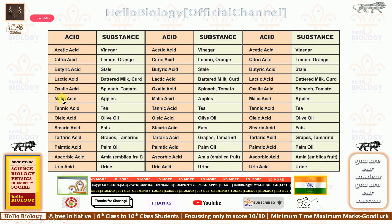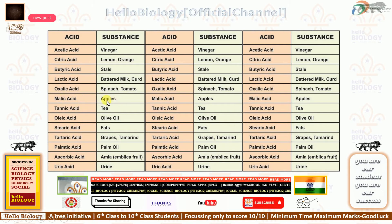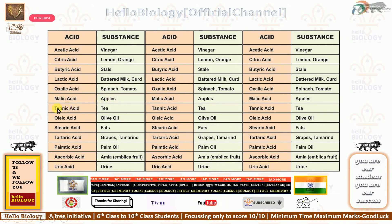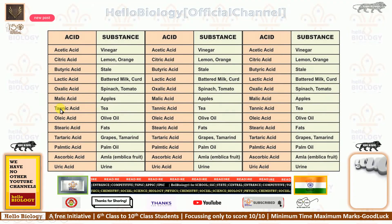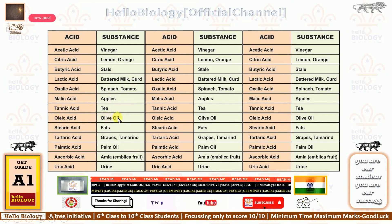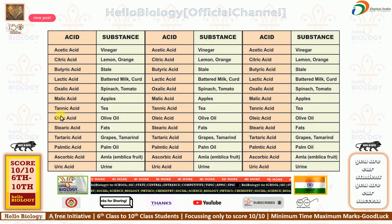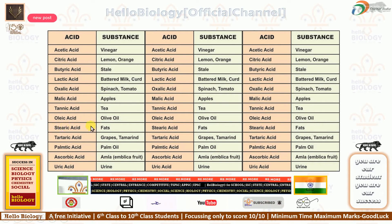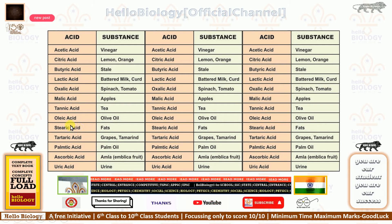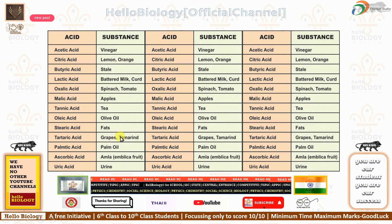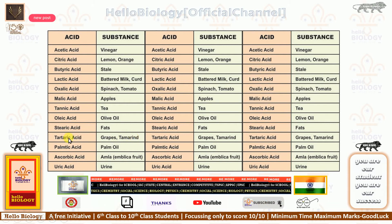Malic acid is present in apples. Tannic acid — 'T' stands for tea, so tannic acid is present in tea. Oleic acid is present in olive oil — the names share the same starting sound. Fats end with 'S', so stearic acid. Tartaric acid is present in tamarind — both start with 'T', and both start with 'tart'.